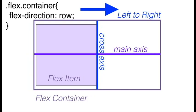When we set flex-direction to row, our main axis is horizontal and our cross axis is vertical. The flow of our flex items will be from left to right along the main axis.